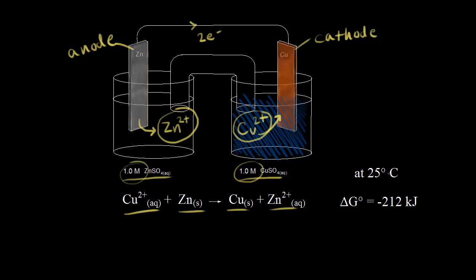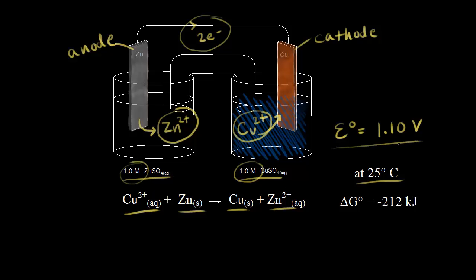So we're under standard conditions. We have one molar for our concentrations, we're at 25 degrees C, and we have solid pure electrodes. The standard cell potential — the cell potential under standard conditions for this cell — is positive 1.10 volts. So we have a spontaneous redox reaction which produces a current, electrons flow in our wire, and we get a voltage.